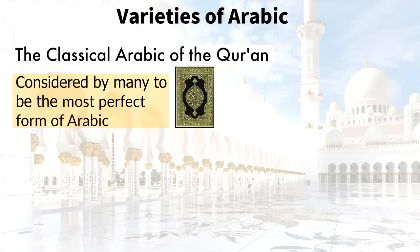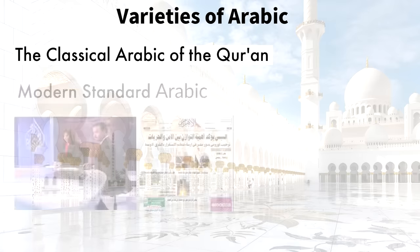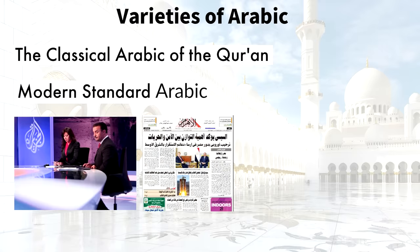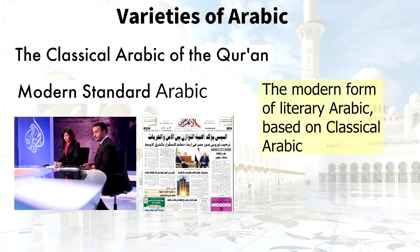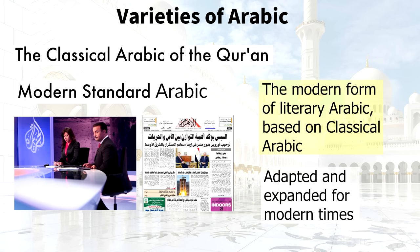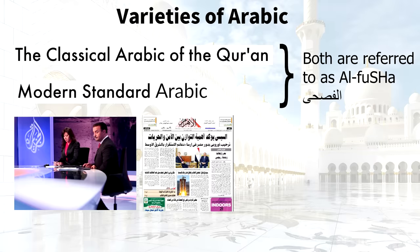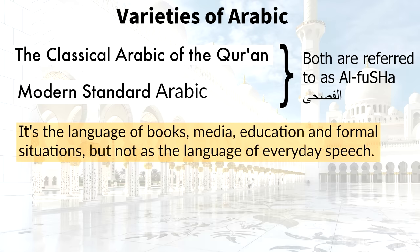Some say Classical Arabic is the only true Arabic, because it was the language in which God revealed the Quran to Muhammad. Then there's Modern Standard Arabic, the form used as an official language today. It's the modern form of literary Arabic, based on Classical Arabic but with adaptations and greatly expanded vocabulary to make it more suitable for modern times. Both Classical and Modern Standard Arabic are referred to by Arabs as Al-Fusha, meaning eloquent speech. Modern Standard Arabic is the language of books, media, education, and formal situations, but not everyday speech.